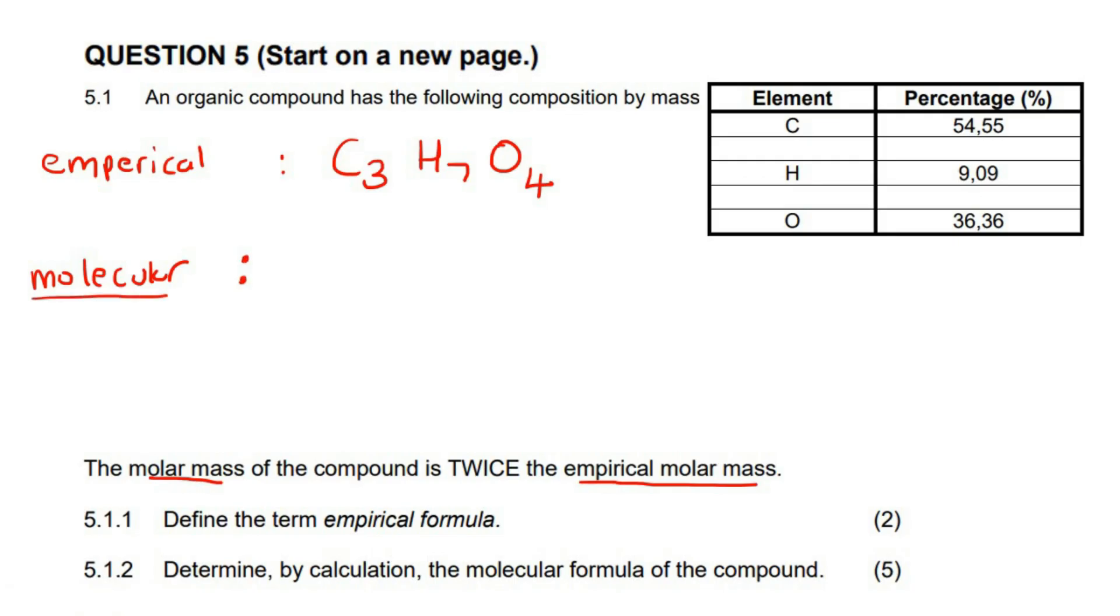Now the molecular mass would always be a multiple of that, so maybe it is triple, so maybe it's C9H21O12. So maybe this is the molecular mass, which is what it looks like in real life, but this is the simplified mass. So in this question they said that it's twice, so this would maybe become like C6H14O8.